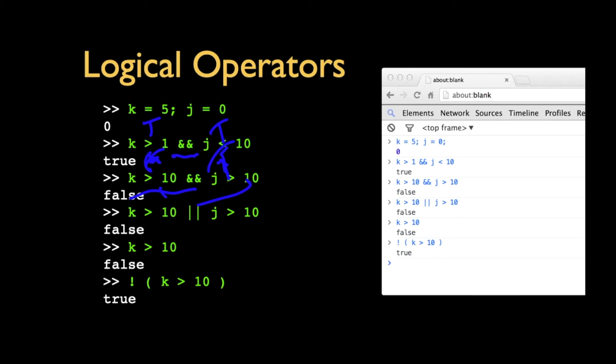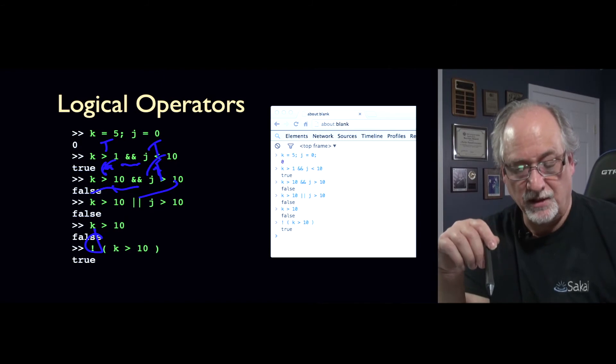Or, is K greater than 10 or J greater than 10? No, neither are true. So, the result is false. And then, there is a unary not operator that you can put in front. That's like saying K greater than 10. Well, that's false. But then, if I apply a not to it, it becomes true.